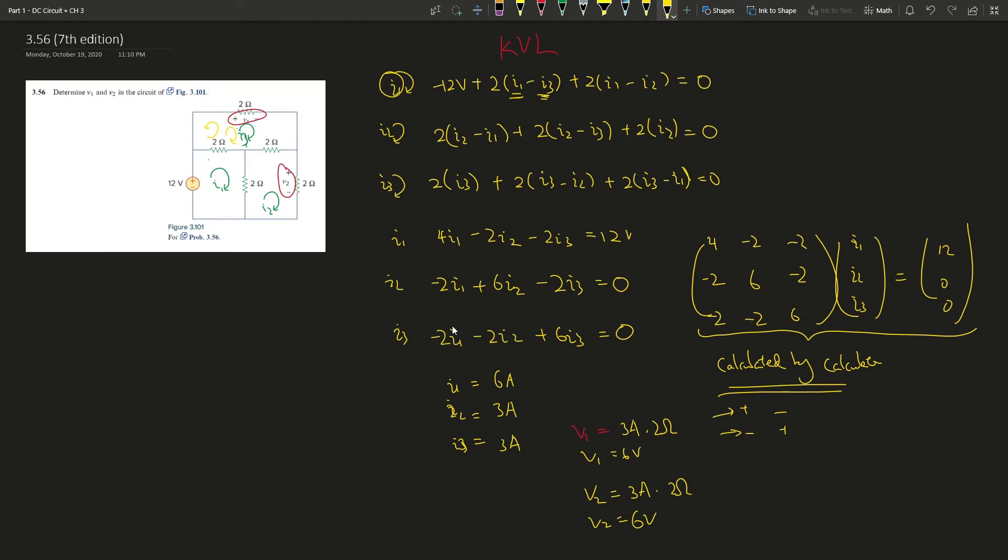Or you can times 2, and then this plus this, you get rid of i1. Then you have i2, i3, i2, i3 independently, and then you can find out what i2 and i3 is, right?